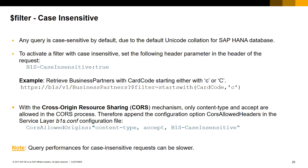As an example, if you need to retrieve all business partners with CardCode starting either with lowercase 'c' or uppercase 'C', you can use the b1s-case-insensitive option to filter the collection with case-insensitivity. Note that if you use the cross-origin resource sharing mechanism, the b1s-case-insensitive parameter needs to be appended in the CORS allowed headers of the b1s.conf configuration file. Please pay attention that query performance for case-insensitive requests can be slower.